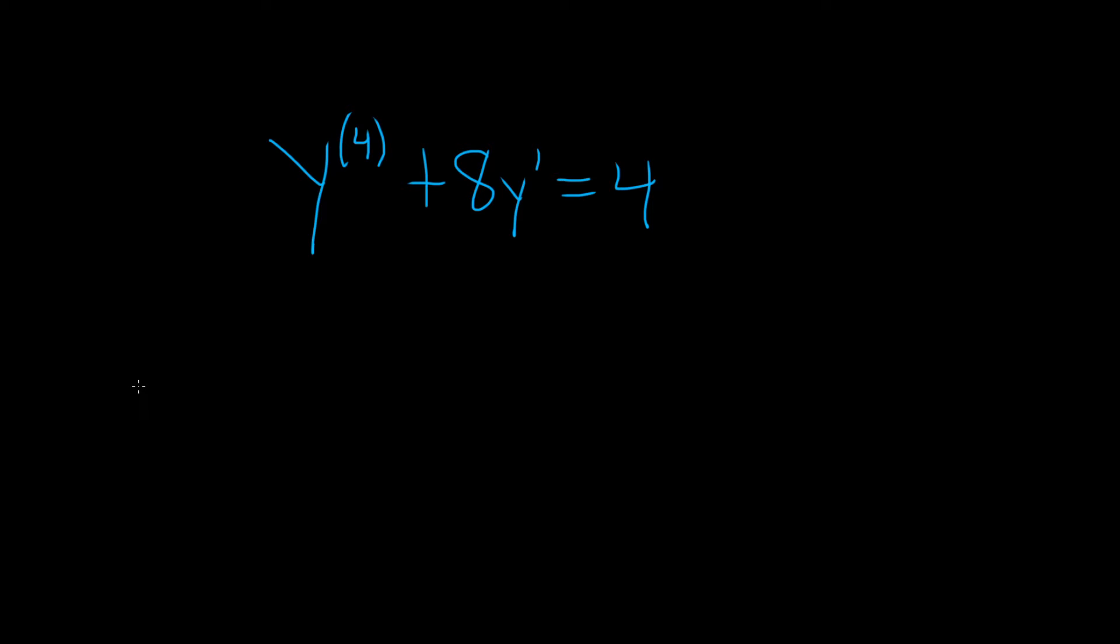In this problem, we have to write this differential equation in terms of linear operators. The notation we use for the differential operator is big D. Big D means take the derivative of whatever it operates on. So if we write big D times y, that's y prime. If we have big D squared times y, that's y double prime—it takes the derivative twice.